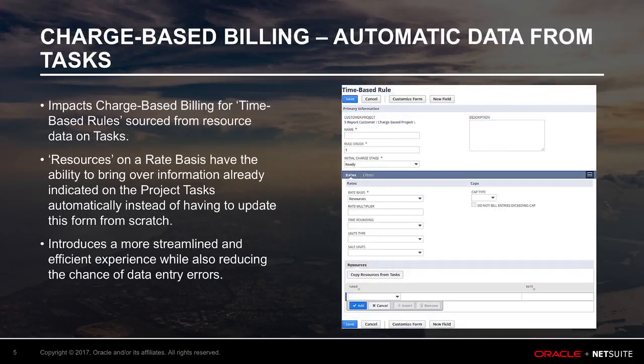In 2018-1, we're introducing a new automation capability called Charge-Based Billing for time-based rules. This feature enables users to source data from resource information on tasks. When selecting resources on a rate basis, you now have the ability to bring over information already indicated on the project tasks automatically. It's no longer necessary to update this form from scratch, allowing for a more streamlined and efficient experience while reducing the chance of data entry errors.